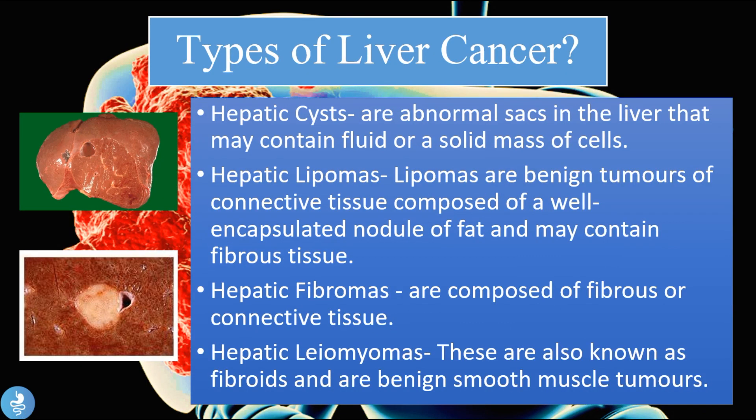Continuing with more benign tumors of the liver, we have hepatic cysts — abnormal sacs in the liver that may contain fluid or a solid mass of cells. We can then have hepatic lipomas, which are benign tumors of connective tissue composed of a well-encapsulated nodule of fat and may contain fibrous tissue.